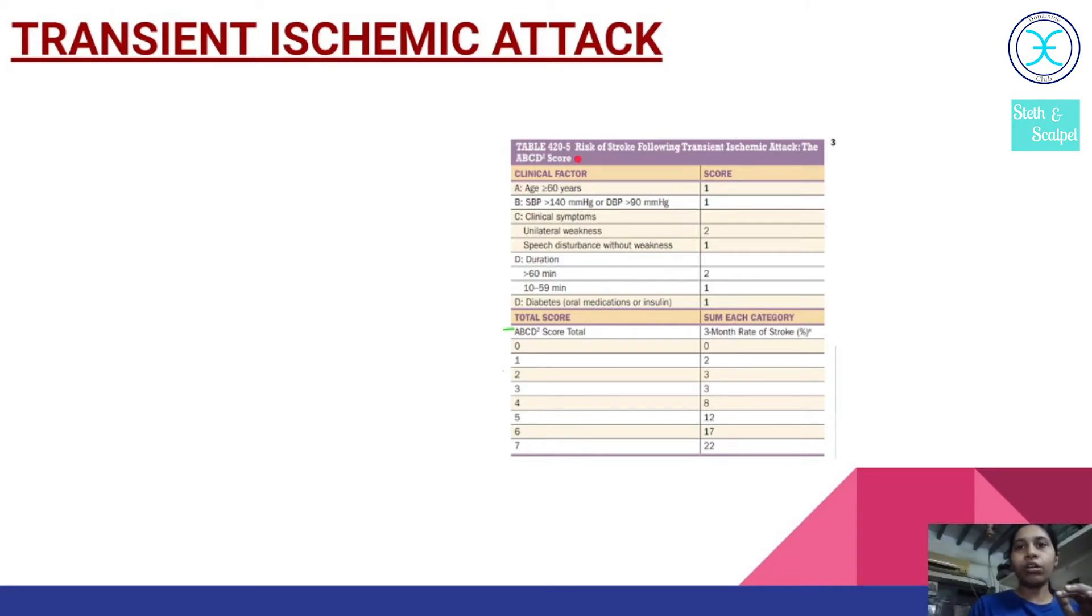The risk for a stroke after this attack is based on the ABCD squared score. A stands for age more than 60, B for BP, C for clinical symptoms like unilateral weakness or speech disturbance, D for duration and D for diabetes. Now based on this score, they will tell about the risk of that person getting the stroke after this attack.